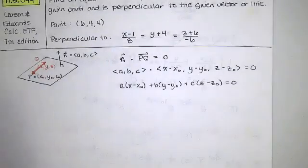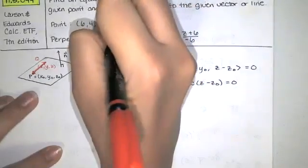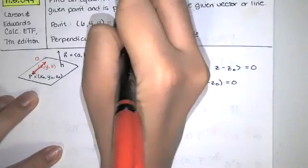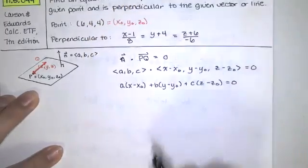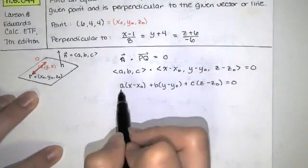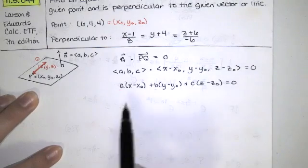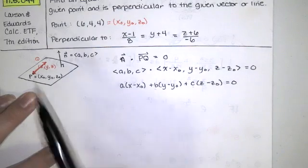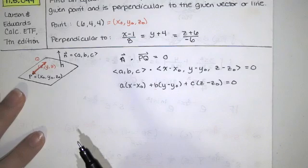So when they give us this point (6, 4, 4) they're really giving us an x naught, y naught, and z naught. The only other things we need to find are a, b, and c. That's the components of the normal vector to that plane.